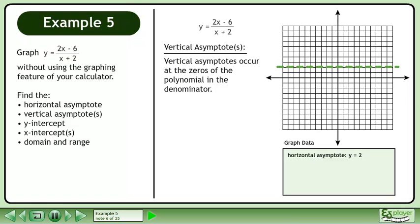Now we will find the vertical asymptotes. Vertical asymptotes occur at the zeroes of the polynomial in the denominator. Write the equation x plus 2 equals 0. Subtract 2 from both sides to get x equals negative 2. There is a vertical asymptote at x equals negative 2.